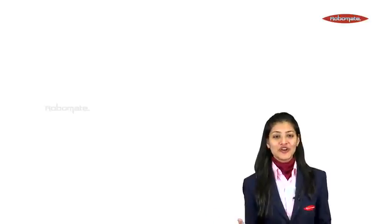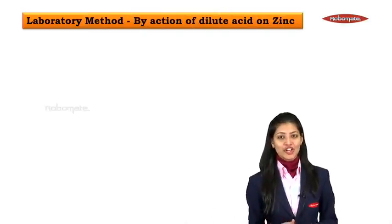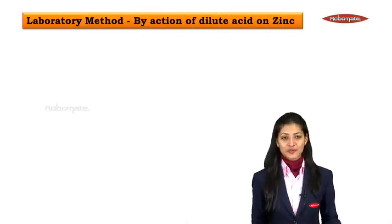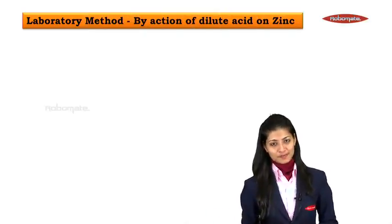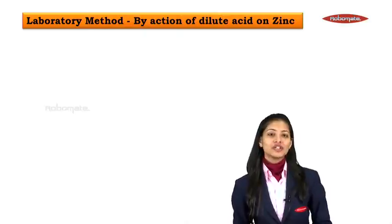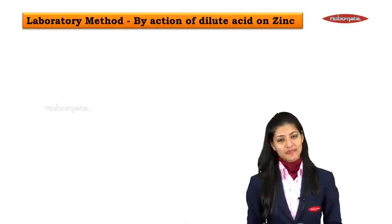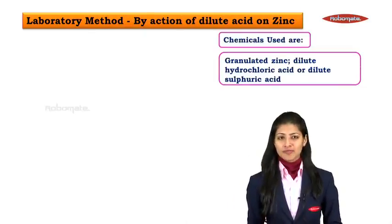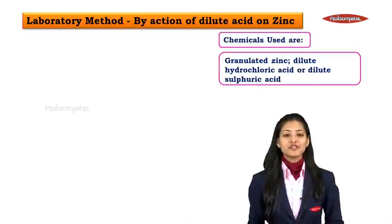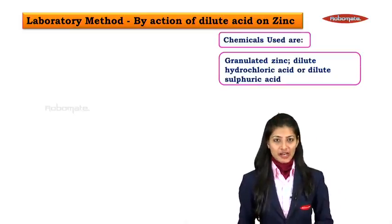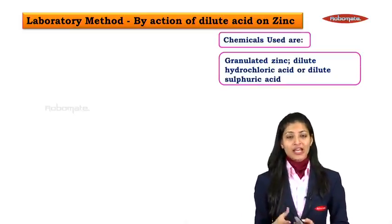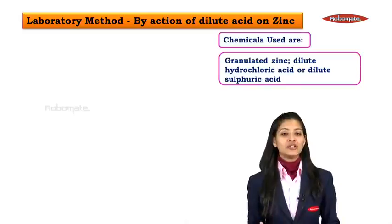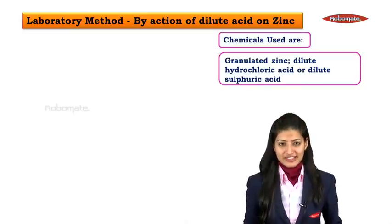Moving on to the laboratory method — in the laboratory, how do we prepare hydrogen? By the action of dilute acid on zinc. The chemicals used for the reaction are granulated zinc and dilute hydrochloric acid or dilute sulphuric acid.